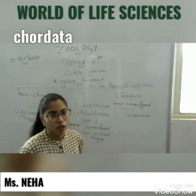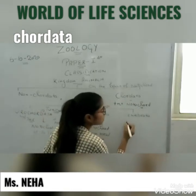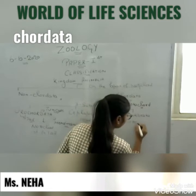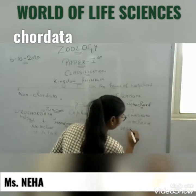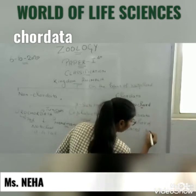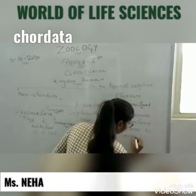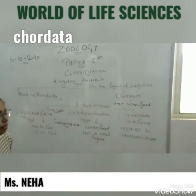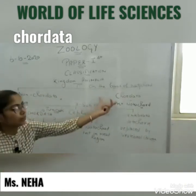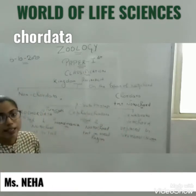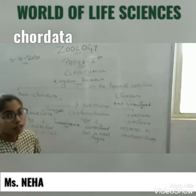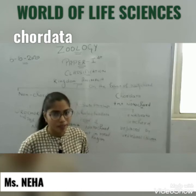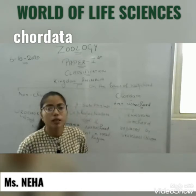In Vertebrata, the notochord is replaced by the vertebral column. On the basis of jaws, vertebrates are classified into two sub-divisions: one is Agnatha, also called Agnathostomata, and second is Gnathostomata.